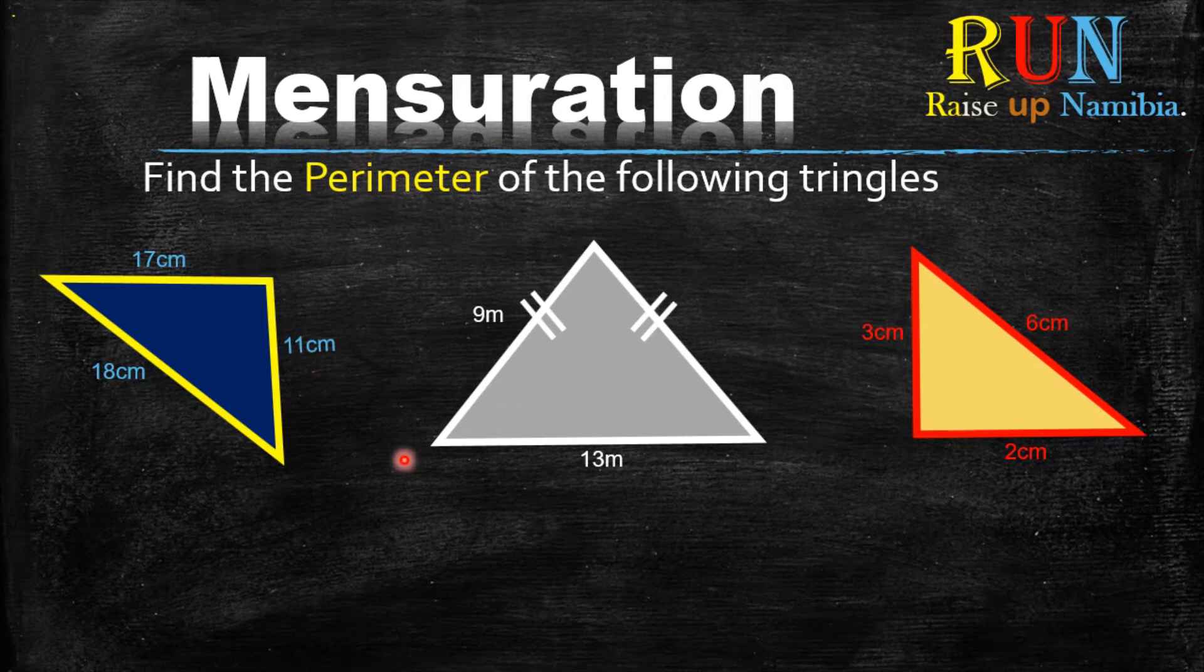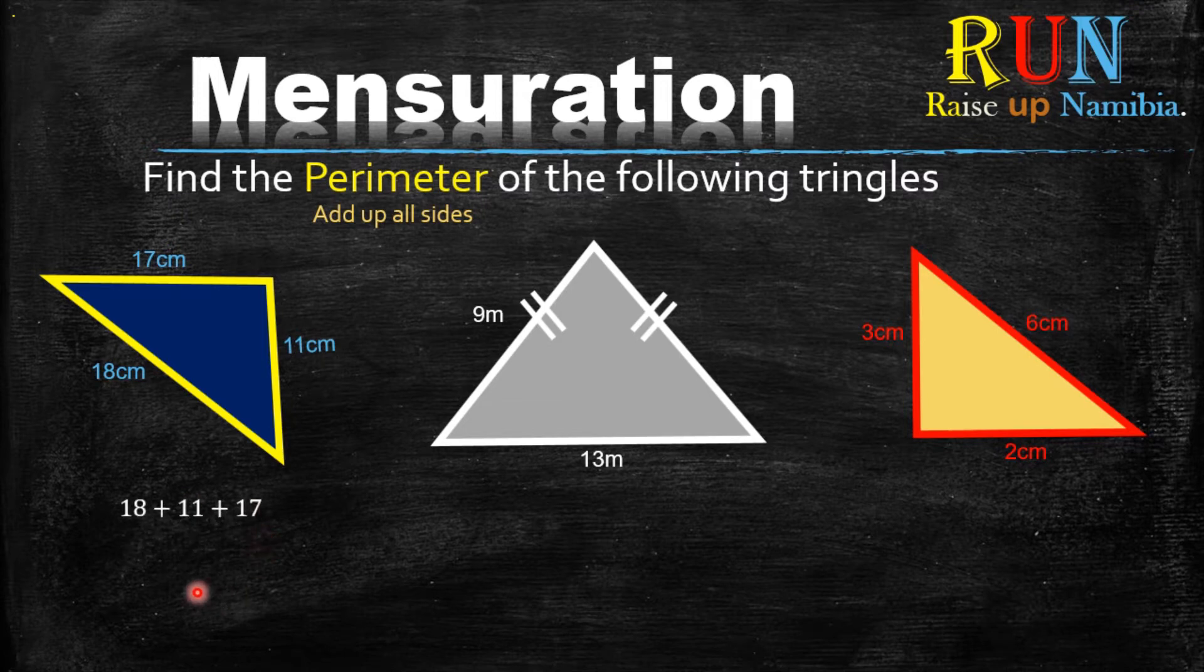So how do we do this? We do this by adding up all the sides. So let's check in our first example here. We add up all the sides which are 18 cm, plus 11, plus 17. What does it give us? It gives us 46 cm.